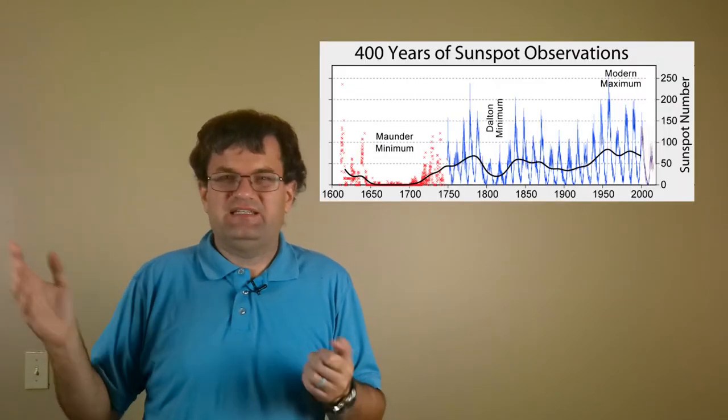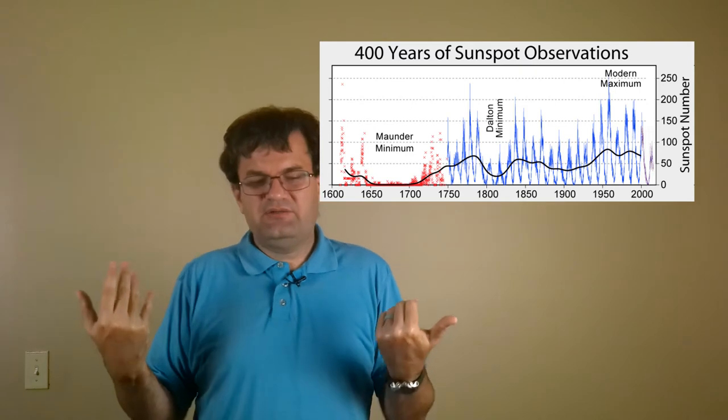We have records of the counts of sunspots that go back to the 1500s, 1600s roughly. So that was a big revelation that the sun was not an absolutely perfect sphere, because it had generally been assumed so.